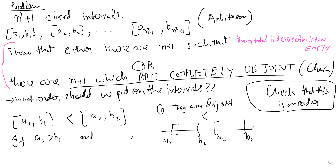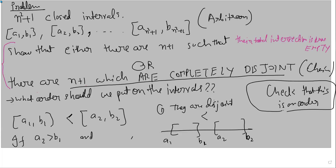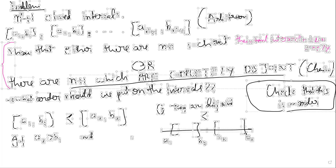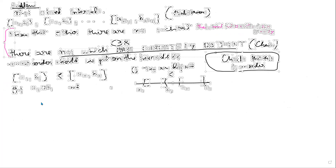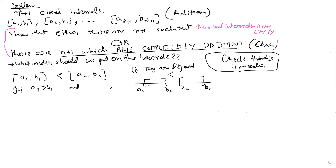Now the problem is solved: you have a poset with n²+1 elements, so by the theorem, there is either a chain of size n+1 or an anti-chain of size n+1. A chain of size n+1 translates to n+1 mutually disjoint intervals, and an anti-chain of size n+1 translates to n+1 intervals sharing a common point. Please prove the small verification steps and draw examples.